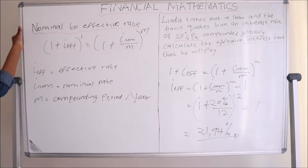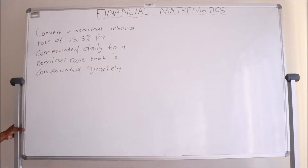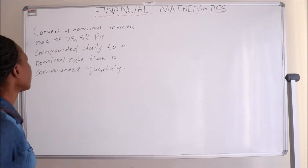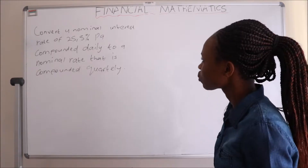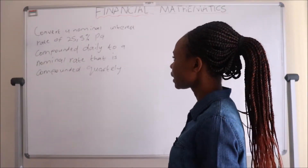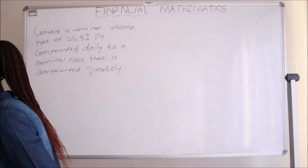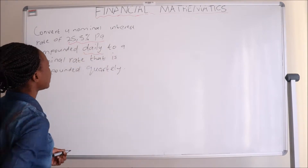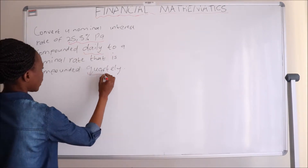Let's do another example so we'll be confident enough to answer more questions regarding interest rates. This question says: convert a nominal interest rate of 25.5% per annum compounded daily to a nominal rate that is compounded quarterly.